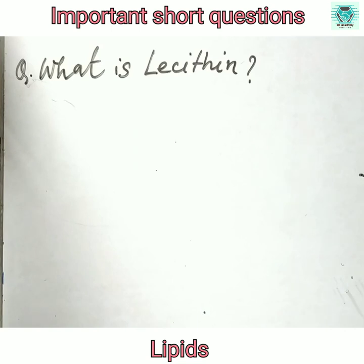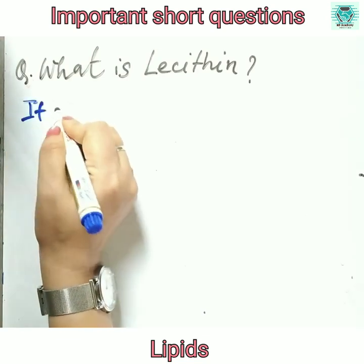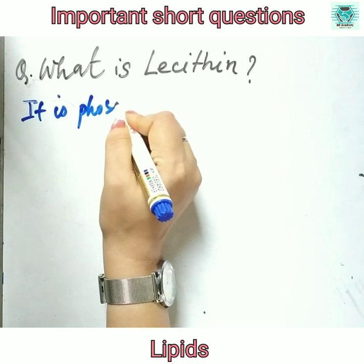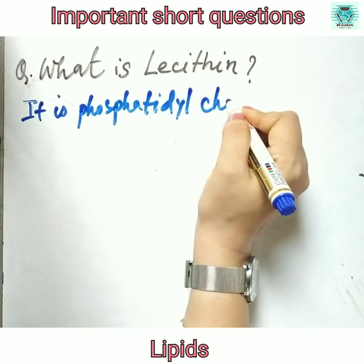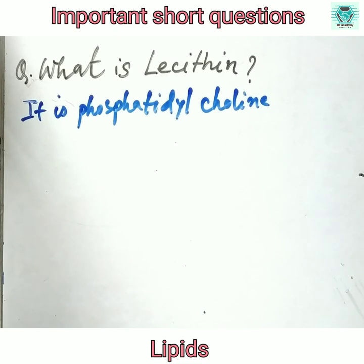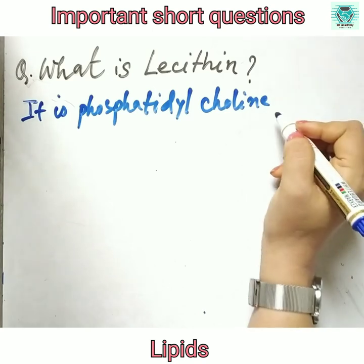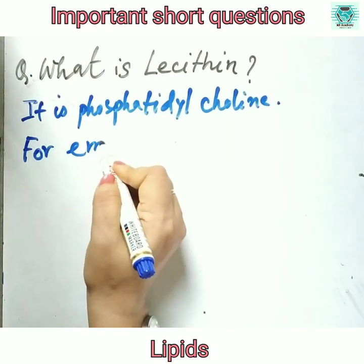What is lecithin? Lecithin is actually phosphatidylcholine, and it is a valuable agent for the emulsification of fats and oils. Lecithin is very important for emulsification.